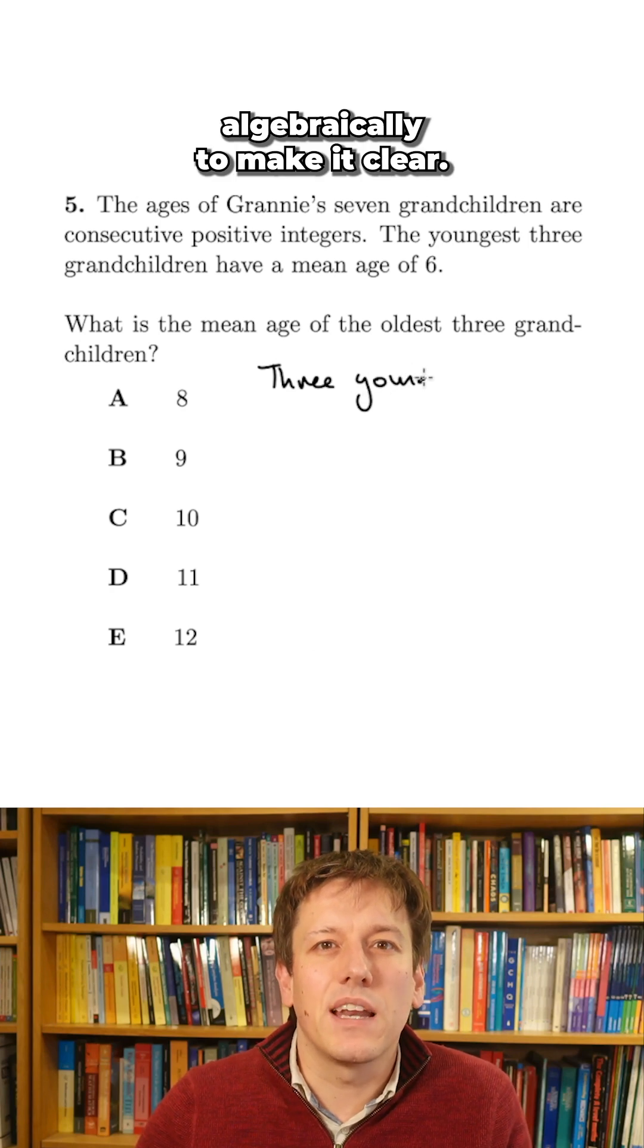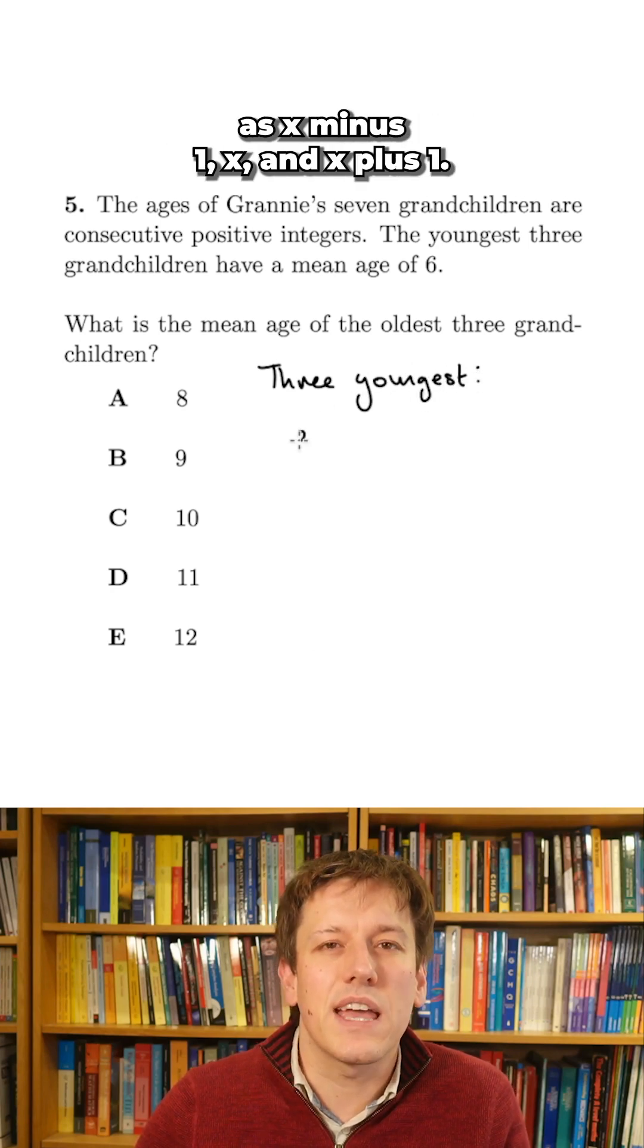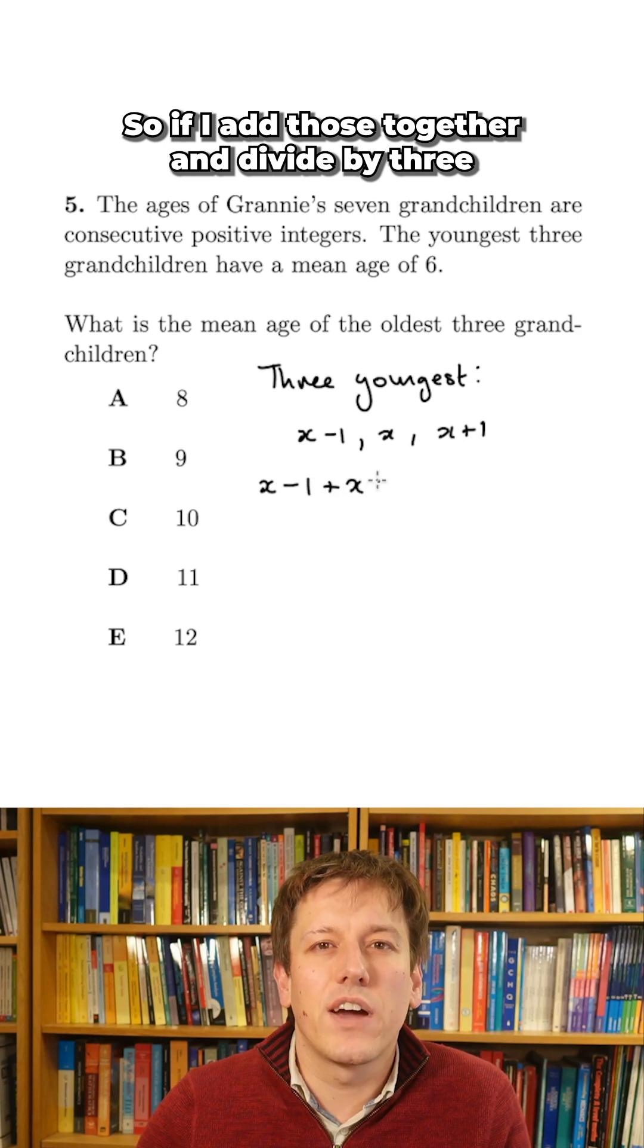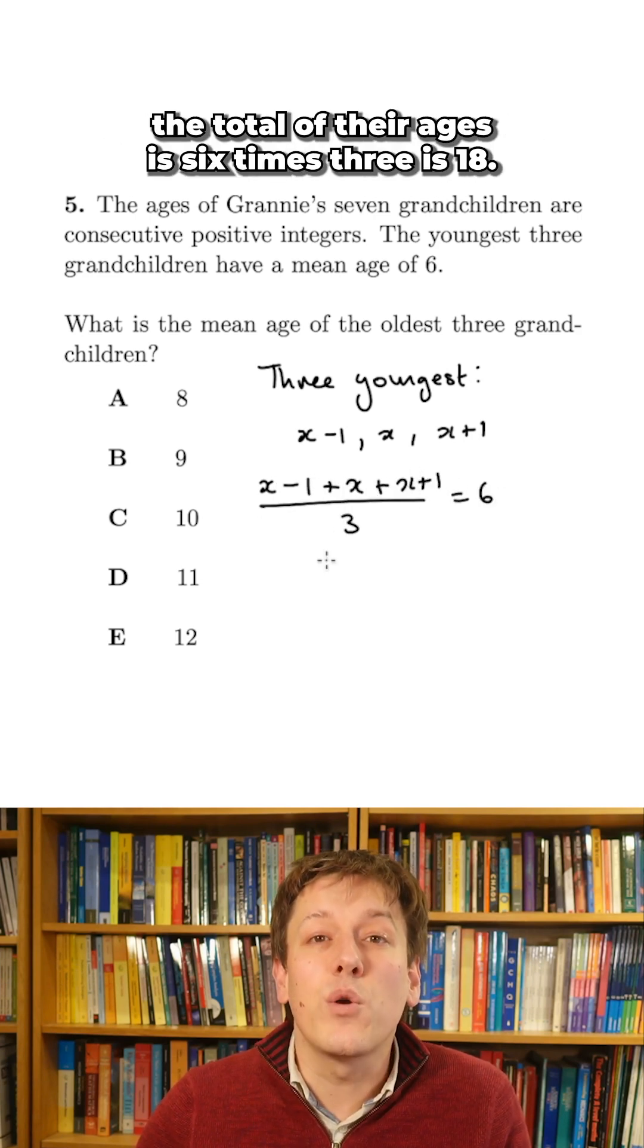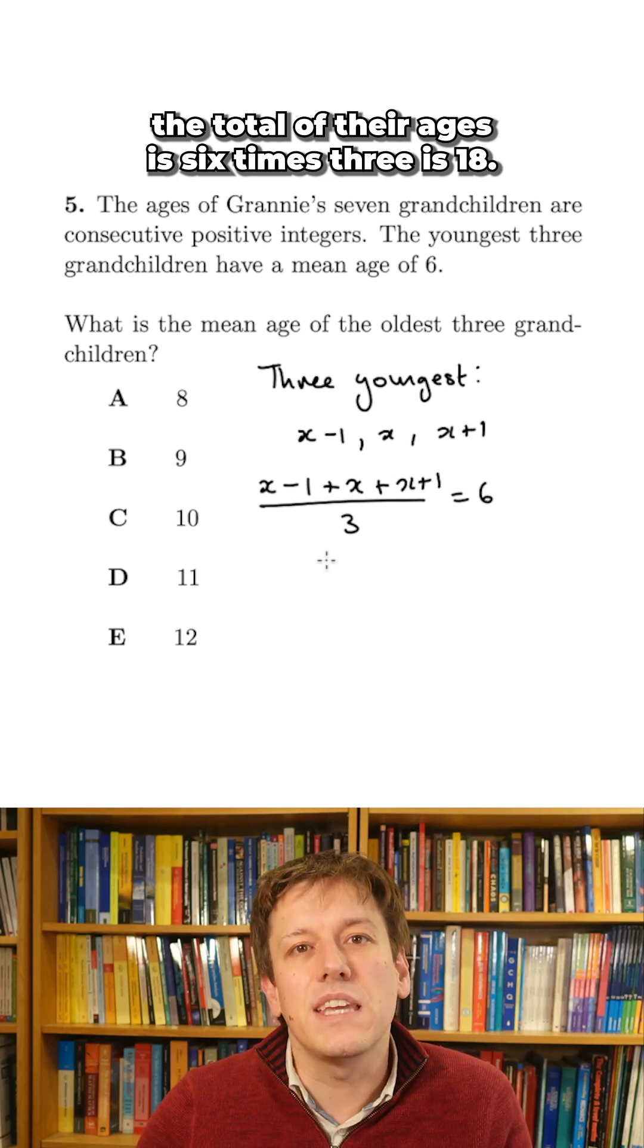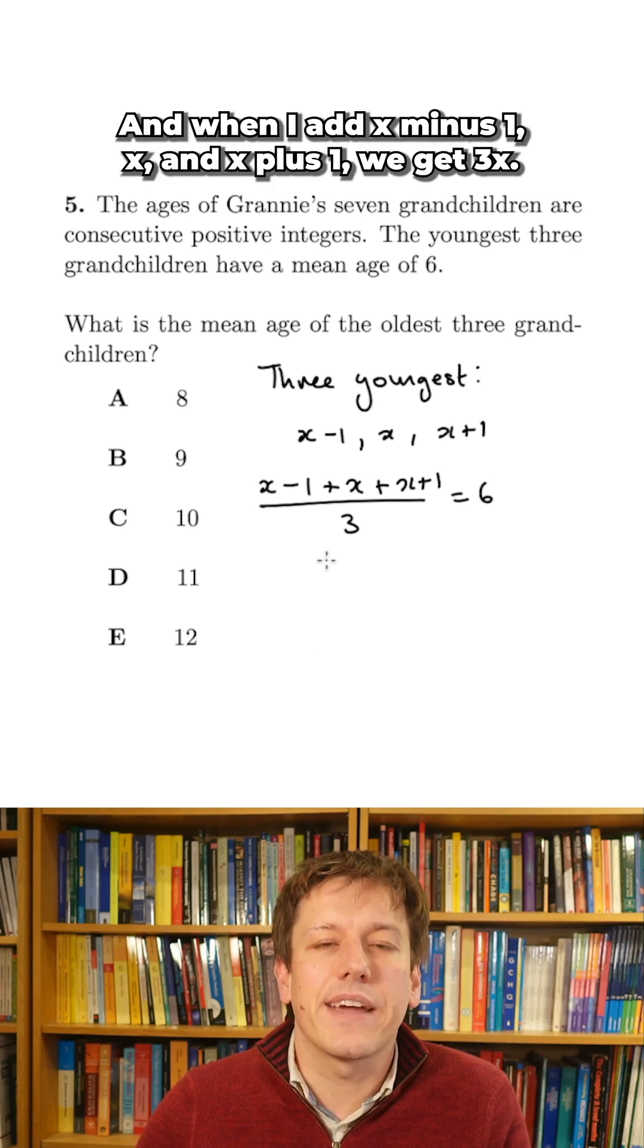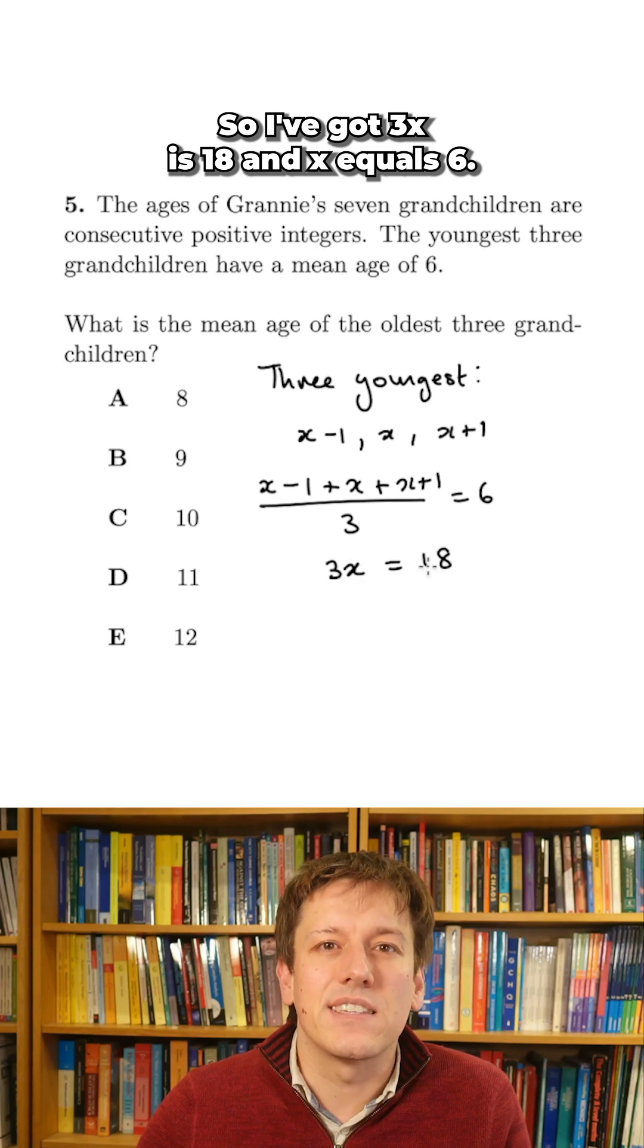Let's write it down algebraically to make it clear. The three youngest we could write as x minus one, x, and x plus one, so if I add those together and divide by three I'd get the average of six. Another way of saying that is that the total of their ages is six times three is 18, and when I add x minus one, x, and x plus one we get three x, so I've got three x is 18 and x equals six.